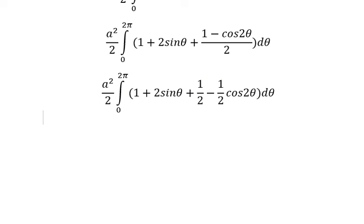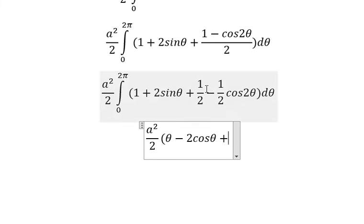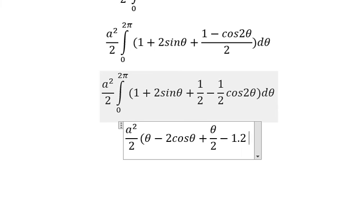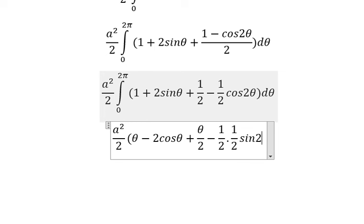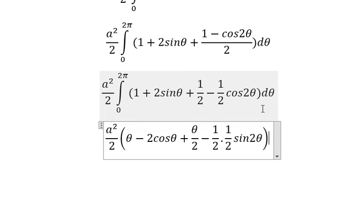So we got the final answer. The integral of number 1, we have θ. We have θ, sine θ, we have negative 2 cosine θ, 1 over 2 we have θ over 2. This one we have 1 over 2, and we have another 1 over 2 sine 2θ.